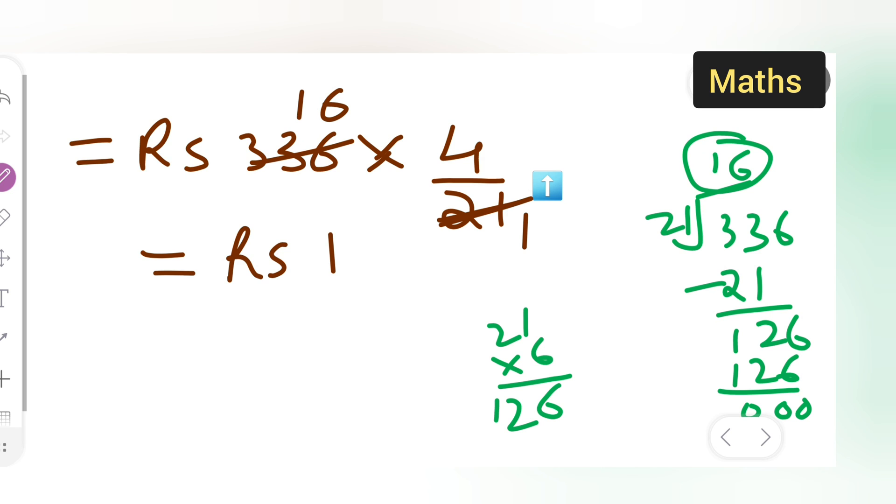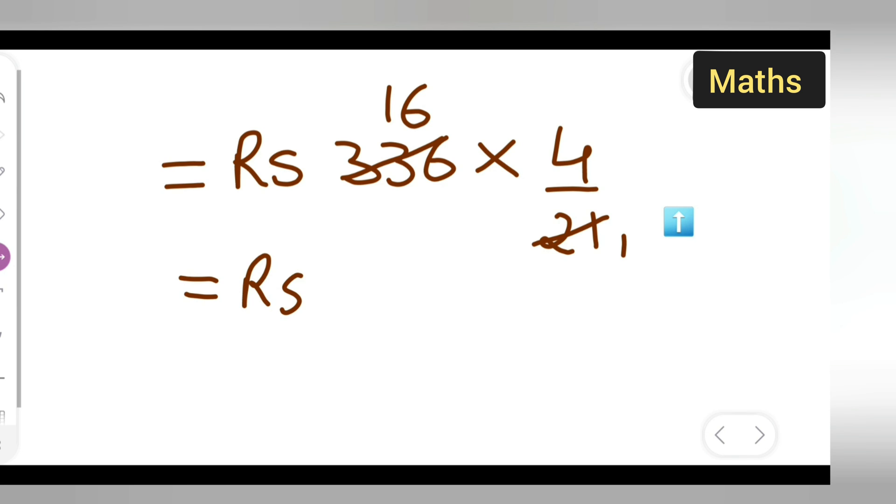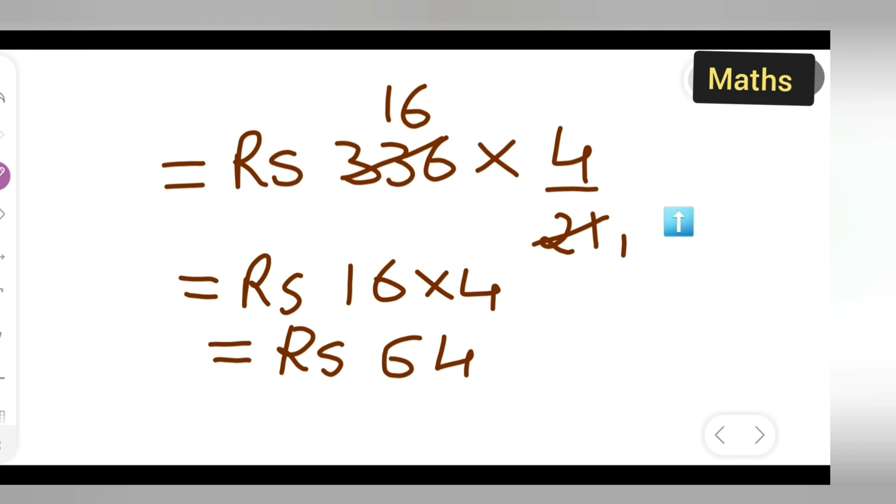16 multiplied by 4. So here you can write down rupees 16 multiplied by 4. When you multiply this, your answer will be rupees 64. 16 multiplied by 4 is 64.